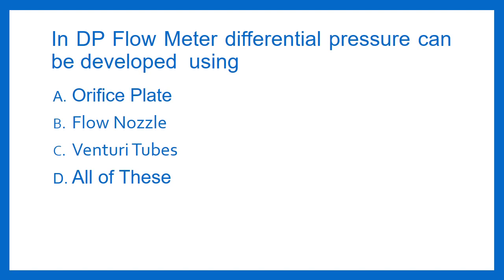In a DP Flow Meter, differential pressure can be developed using: Option A - Orifice Plate, Option B - Flow Nozzle, Option C - Venturi Tubes, Option D - All of these. The answer is Option D: All of these.